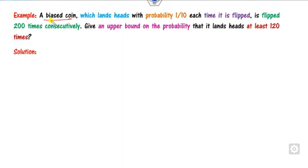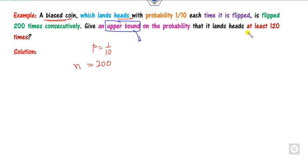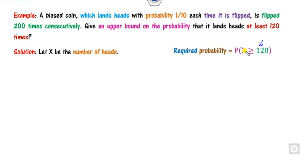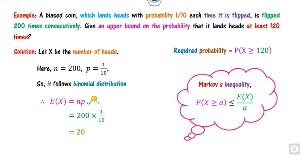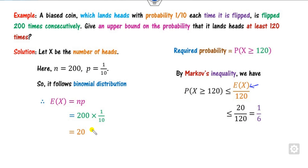In the next example, a biased coin has probability of heads P = 1/10. The coin is flipped n = 200 times. Find the upper bound for getting at least 120 heads. Since n is finite, X follows a binomial distribution. E[X] = nP = 200 × (1/10) = 20. Applying Markov inequality: P(X ≥ 120) ≤ 20/120 = 1/6 as the required answer.